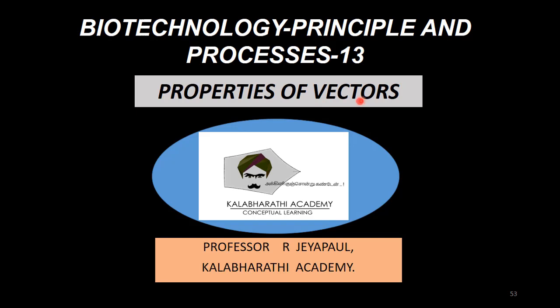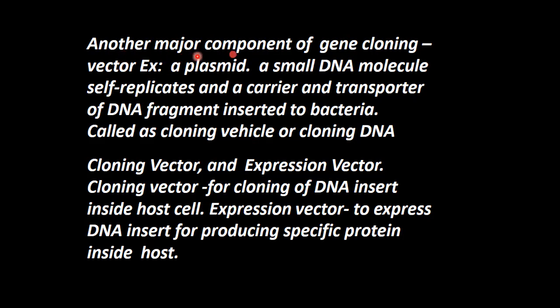All the plasmids can be used as vectors. This plasmid cell has certain characters and properties. What are all the properties of these vectors required for production of the recombinant DNA? Another major component — DNA ligase, restriction enzyme in genetic engineering — another component is a vector.